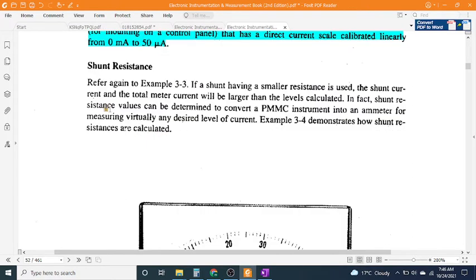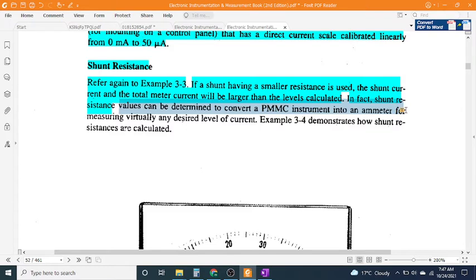Shunt resistance: Refer again to Example 3-3. If a shunt having a smaller resistance is used, the shunt current and the total meter current will be larger than the levels calculated. In fact, shunt resistance values can be determined to convert a PMMC instrument into an ammeter for measuring virtually any desired level of current. Example 3-4 demonstrates how shunt resistances are calculated.